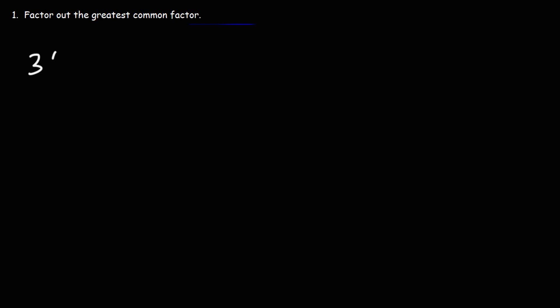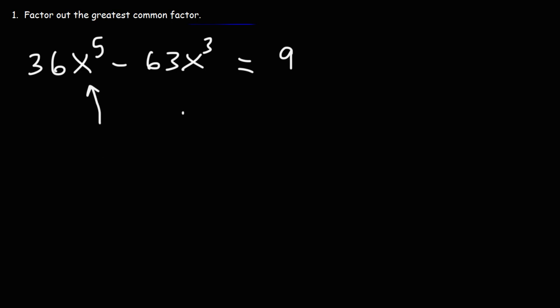Let's try another similar example. We have 36x to the 5th minus 63x cubed. What's the GCF in this case? The highest multiple of 36 and 63 — both of those numbers are divisible by 3 and also by 9, so 9 is going to be part of the GCF. Looking at these two terms, the smaller of them is x cubed, so x cubed is going to be part of the greatest common factor.